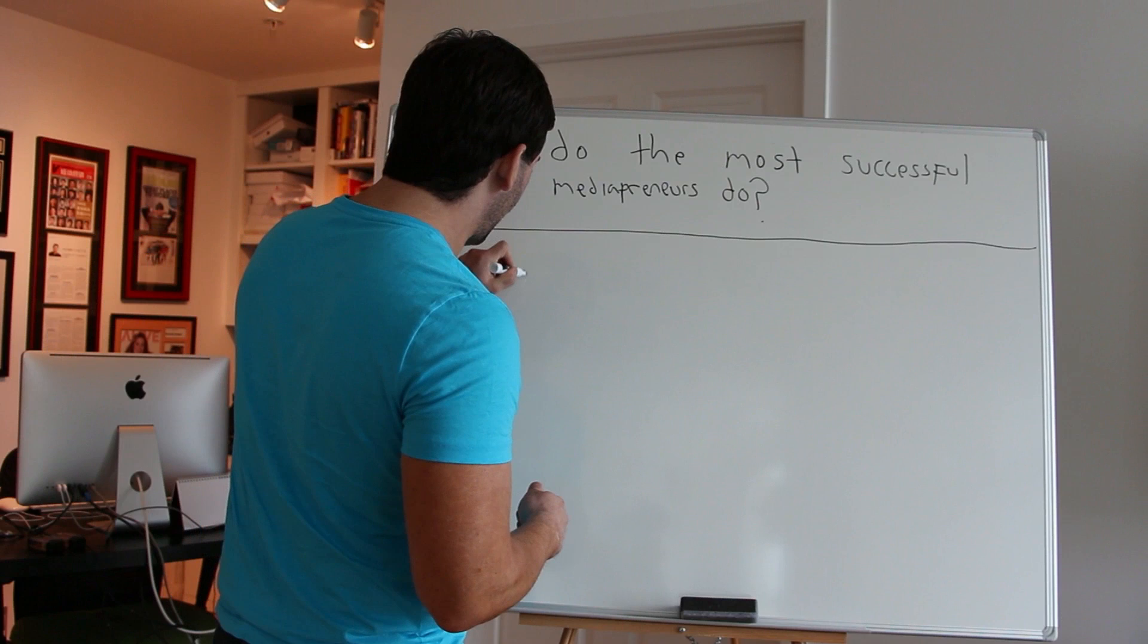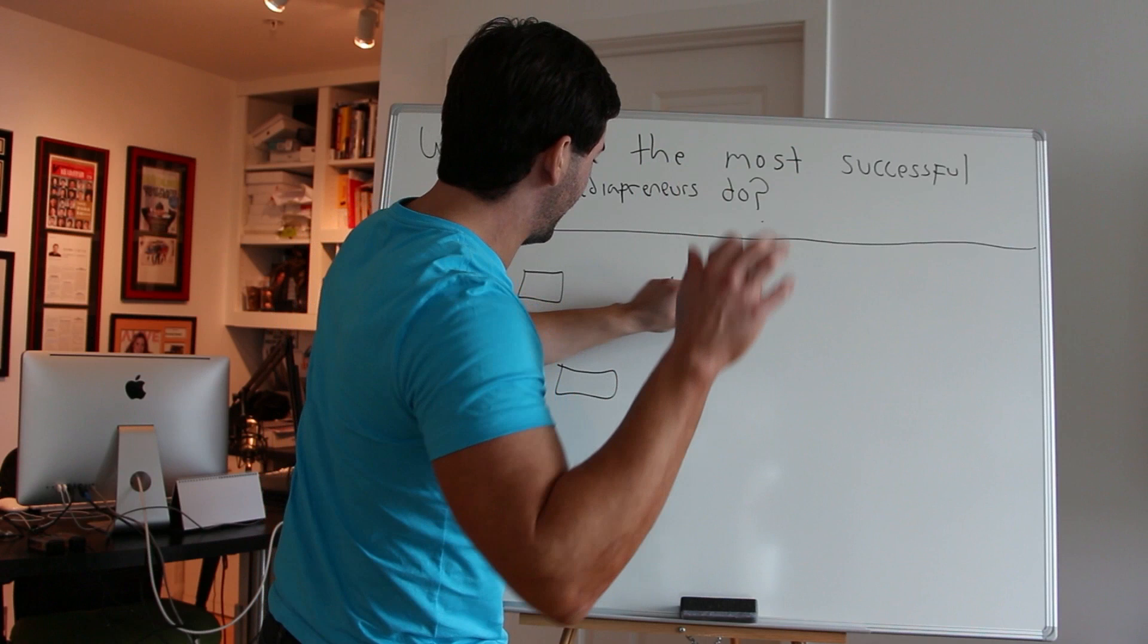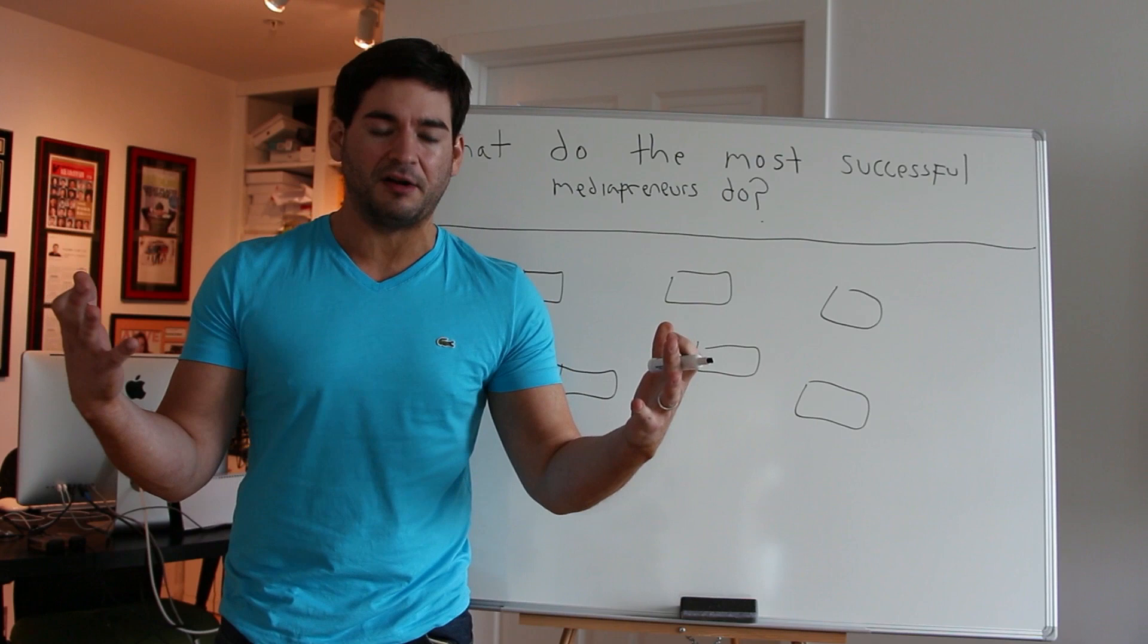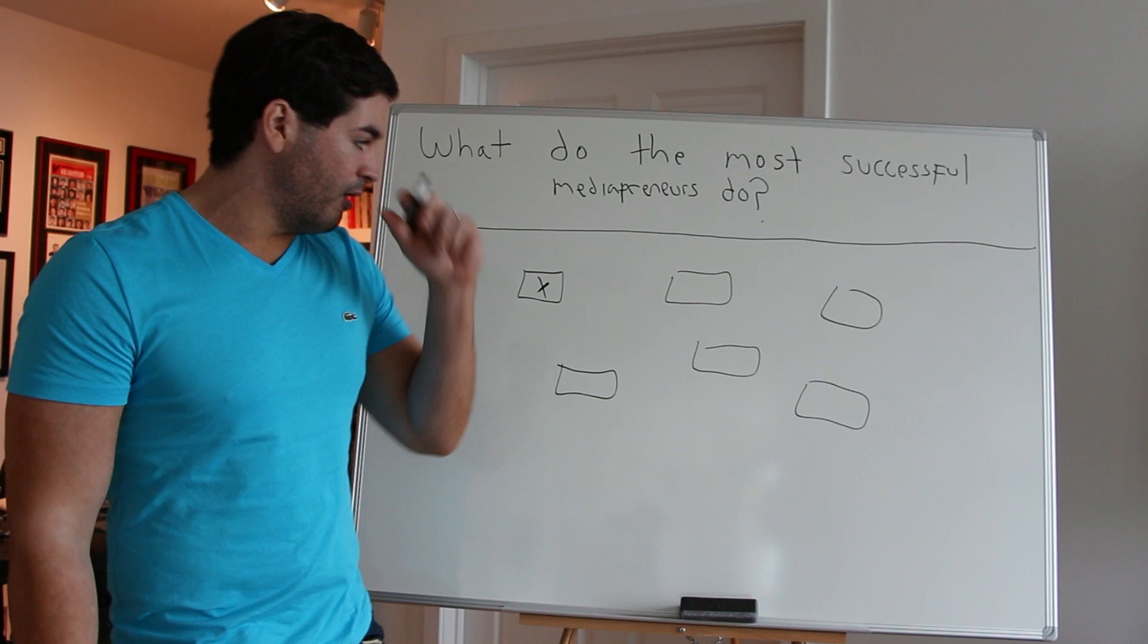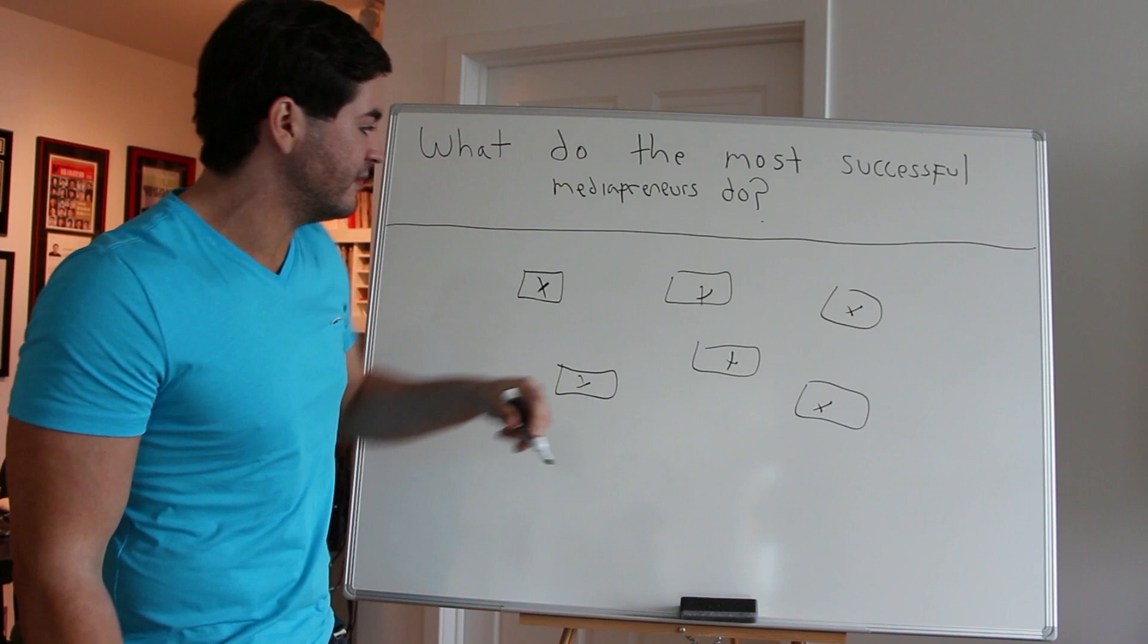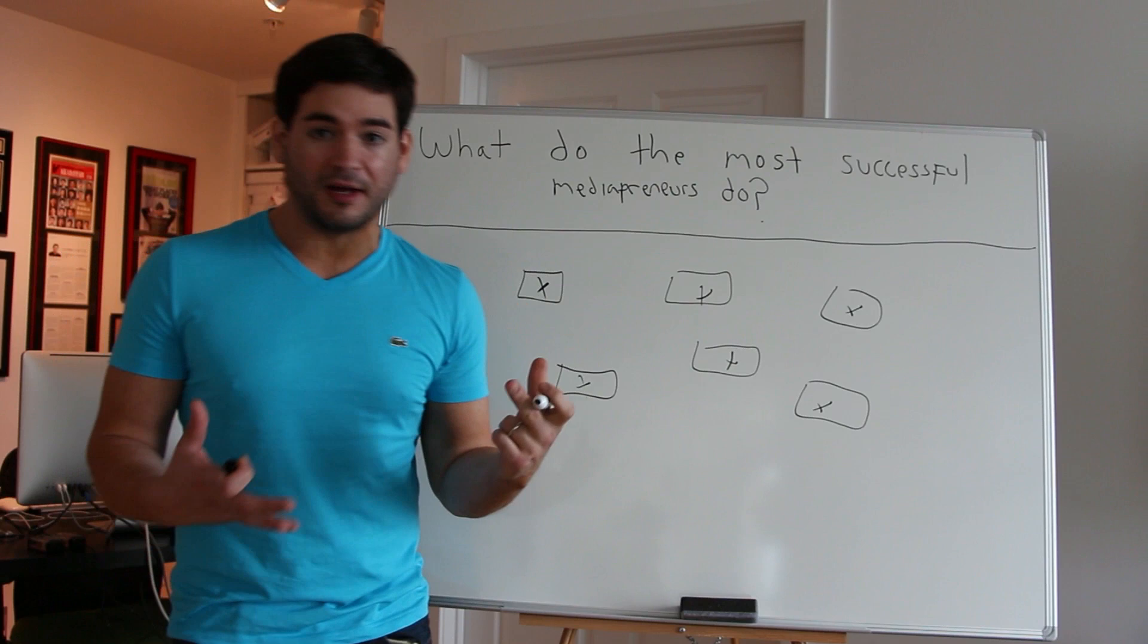So let's talk about what other people do, people that aren't so successful with their information products and their online programs. What they'll do is they'll create a lot of different programs. They'll create like this constellation of different programs on different things. This program's on losing weight, this program's on gaining weight, this program's on healthy eating. But there's like all these different programs and constellation of stuff at different price points out there.